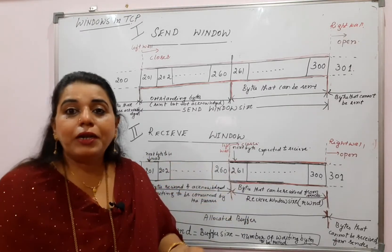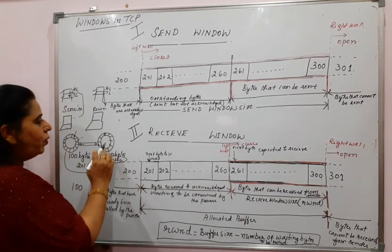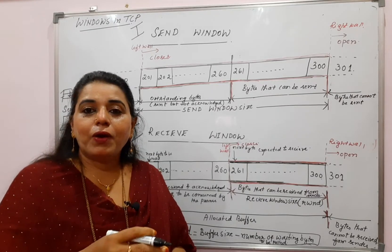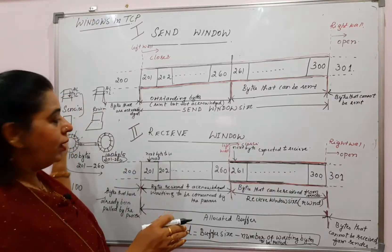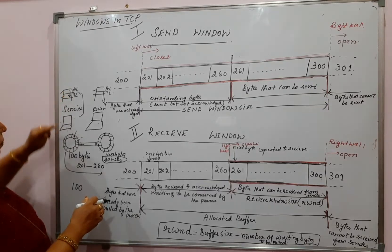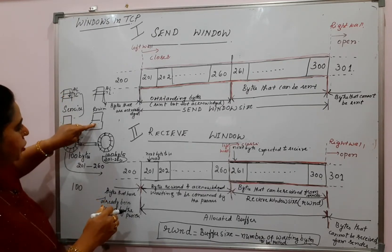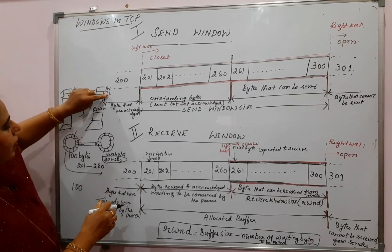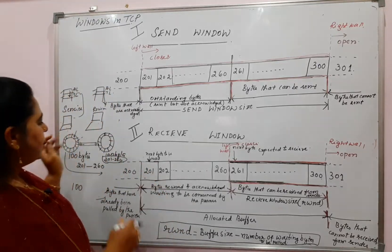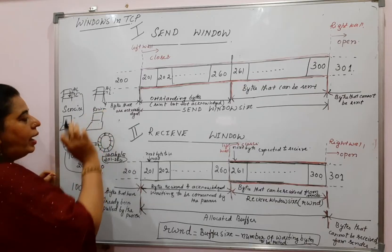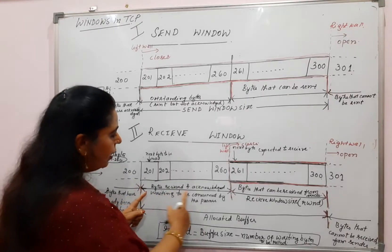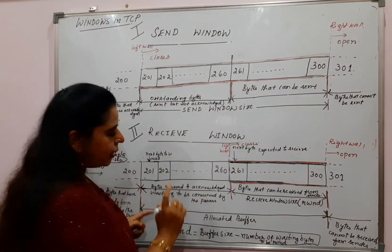The receiver cannot send to the application layer because the mode of transfer here is pulling — only the application layer will pull the bytes at the receiver side, so we call it a pulling process. At the sender side, the application layer pushes bytes to the transport layer, and the sender pushes to the receiver buffer. But at the receiver side, the application layer pulls the bytes. That is why 201 to 260 is still in the buffer, not yet consumed by the process.